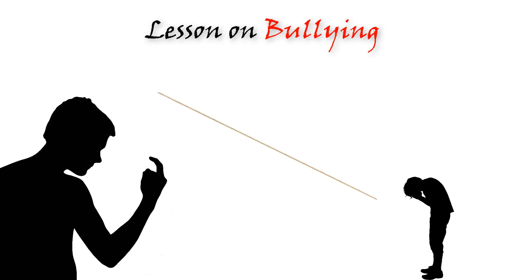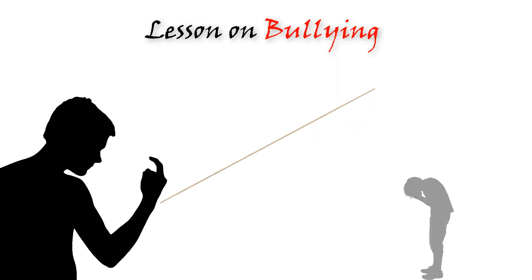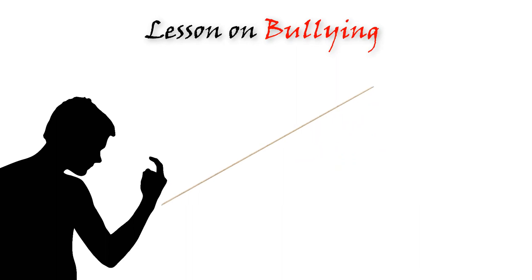Otherwise, there would be no reason to bully. So it is the bully who is the first one to feel inferior, who has a problem. The bullying behavior is actually an attempt to pull others down to the bully's level, to try to bring things back into balance from the bully's perspective.